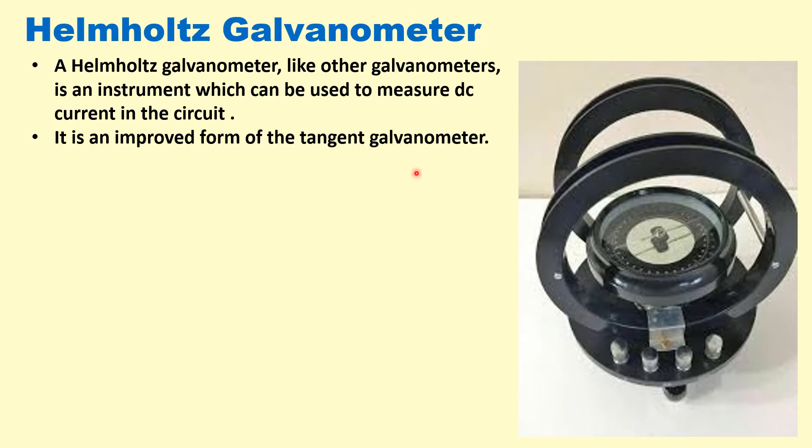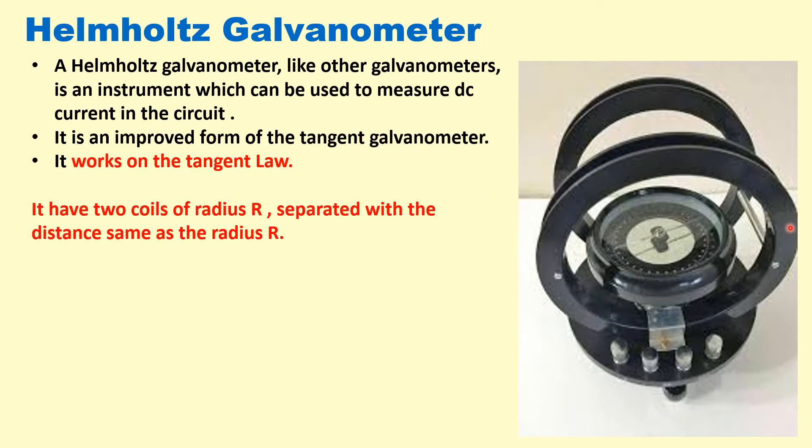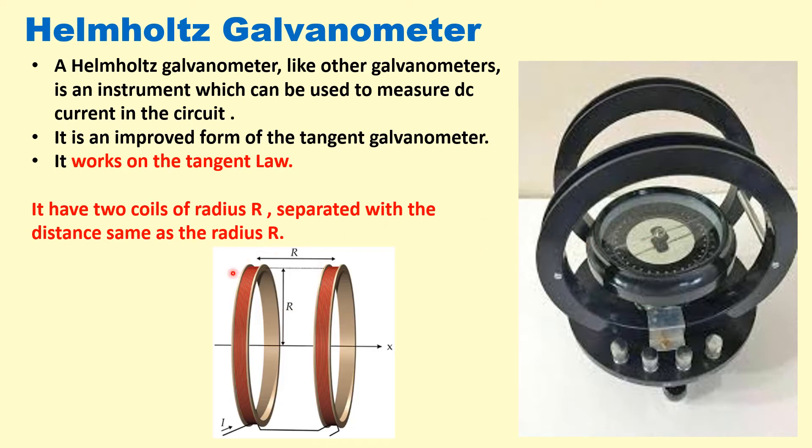It is an improved form of tangent galvanometer and it works on the tangent law. It has two coils of radius r and their separation is also r equal to the radius of the coil. This kind of arrangement is known as Helmholtz galvanometer.